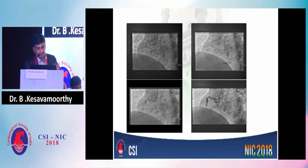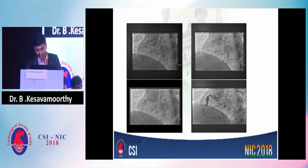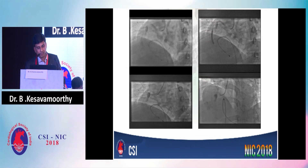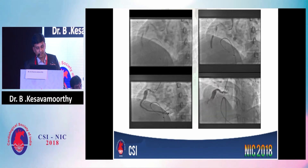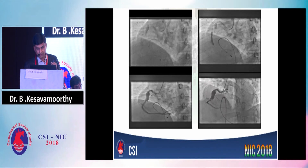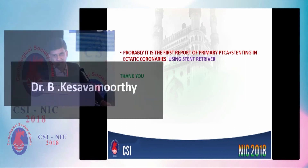You can see the distal flow restored. As thrombolysis had been given on the same day, we did not stent on that day — there was a tight lesion beyond the ectatic segment. The next day, the patient was taken up and we stented. This is the final result, and this is probably the first report of primary PCI in ectatic coronary arteries using a stent retriever. Thank you.